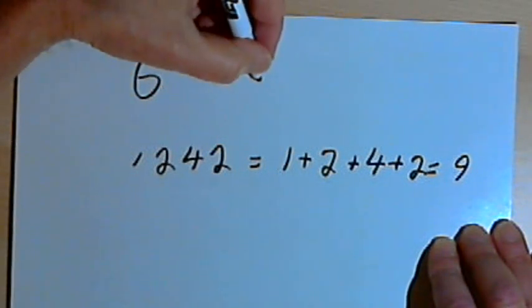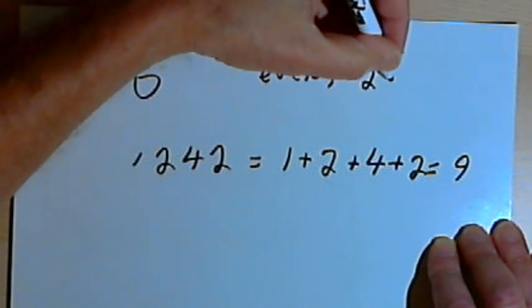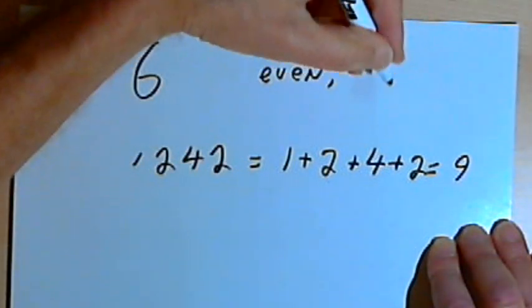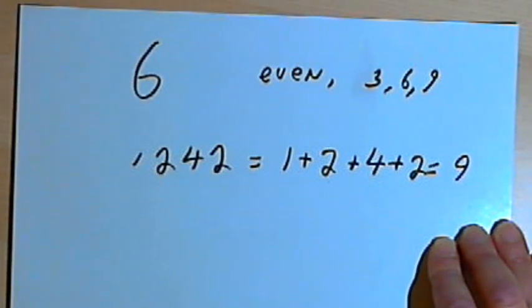So in other words, the number has to be even, and I have to add up my digits to a 3, a 6, or a 9.